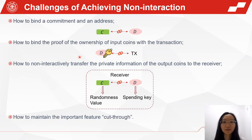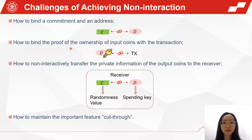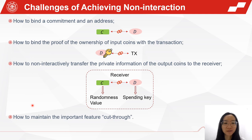Given the initial idea of adding an address to achieve non-interaction, there are still some challenges. First, how to bind a commitment and an address? Second, how to bind the proof of ownership of input coins with the transaction? Third, how to non-interactively transfer the private information of the output coins to the receiver? Finally, how to maintain the important feature, cut-through?